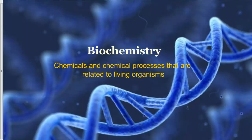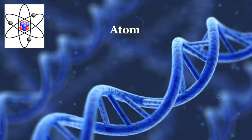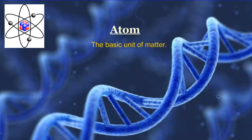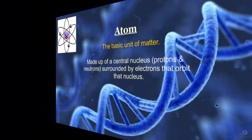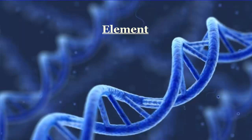The next term is atom. An atom is the basic unit of matter. It is made up of a central nucleus consisting of protons and neutrons — the blue and red circles — surrounded by electrons that orbit that nucleus. Protons are positive, neutrons are neutral, and electrons are negative.